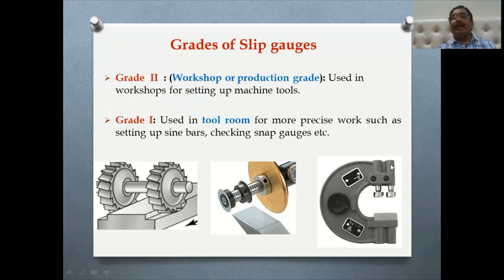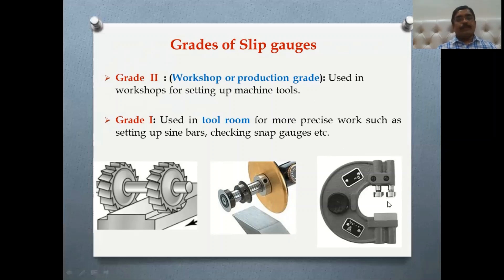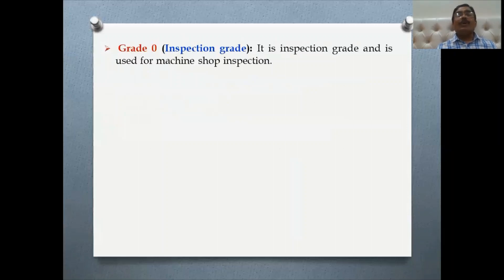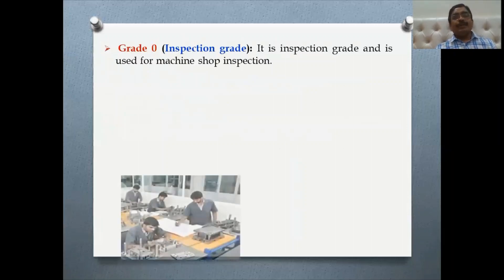Grade 1 is mostly used in the tool room. An example shown is the sine bar, already discussed, and also the adjustable snap gauge — this gap can be set using a slip gauge by adjusting the screw to move the button forward or backward. That is the Grade 1, used in the tool room.